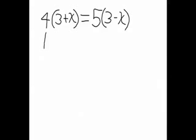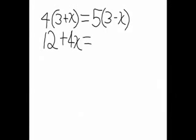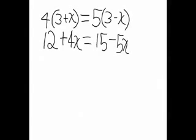So we do: 4 times 3 equals 12, plus 4 times x equals 4x, equals 5 times 3 equals 15, minus 5 times x equals 5x.